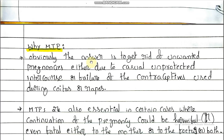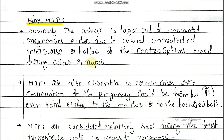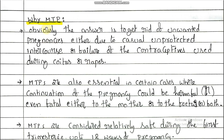Next, why MTP? Why is the procedure of MTP required? Here we discuss MTP — what it is and which type of people undergo MTP, medical termination of pregnancy. Obviously, the answer is to get rid of unwanted pregnancies, either due to casual unprotected intercourse, or failure of the contraceptives used during coitus, or rapes.